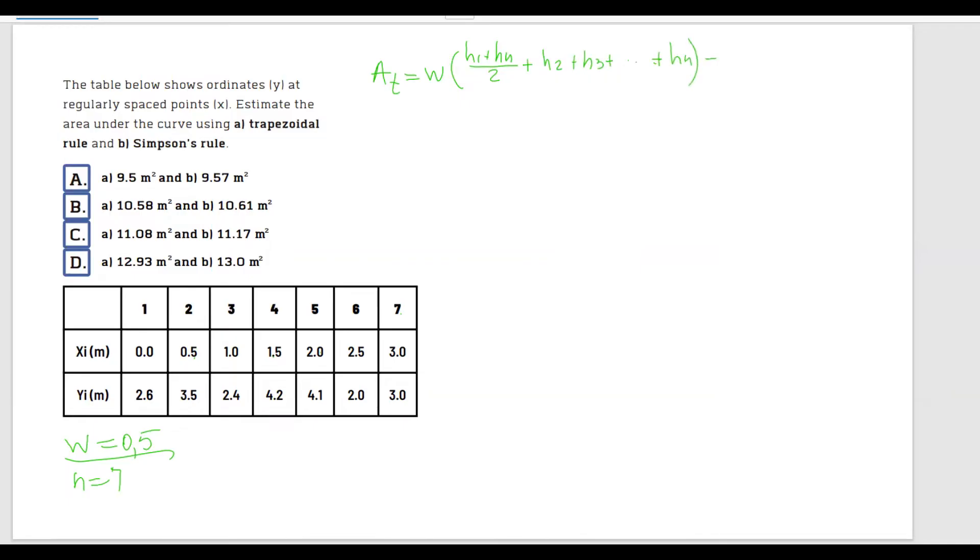And if we were to apply it to our case, we're going to have w multiplied by h1 plus hn. We have, we already talked about this, we have seven intervals, so hn is going to be equal to seven, divided by two. And actually I encourage you to stop this video, go ahead and solve this by yourself, and come back and let's match our results.